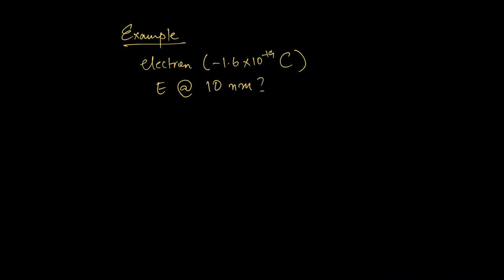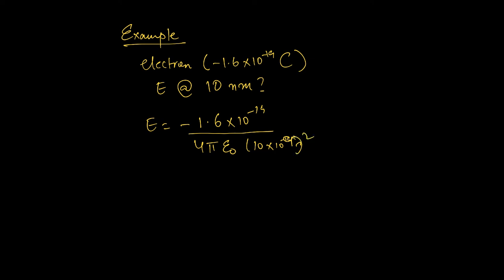Let's work through one example using this equation and then we'll close the video. Say you have an electron, and the charge on the electron is given. What is the electric field strength 10 nanometers away from this electron? You can write out your equation — you have negative 1.6 times 10 to the negative 19 coulombs, and remember to put the negative sign in front. With the permittivity of free space in there and a distance of 10 times 10 to the negative 9 meters squared, it comes out to negative 1.4 times 10 to the 7 Newtons per Coulomb.